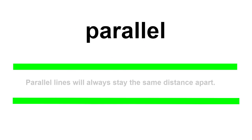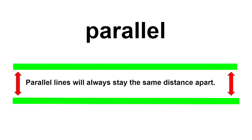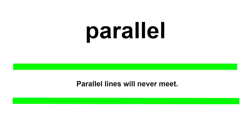Let's look at these parallel lines. You know that lines are parallel when they stay the same distance apart, and parallel lines never meet. The ends of these lines keep going and going and going and they will never meet the other end of the lines.